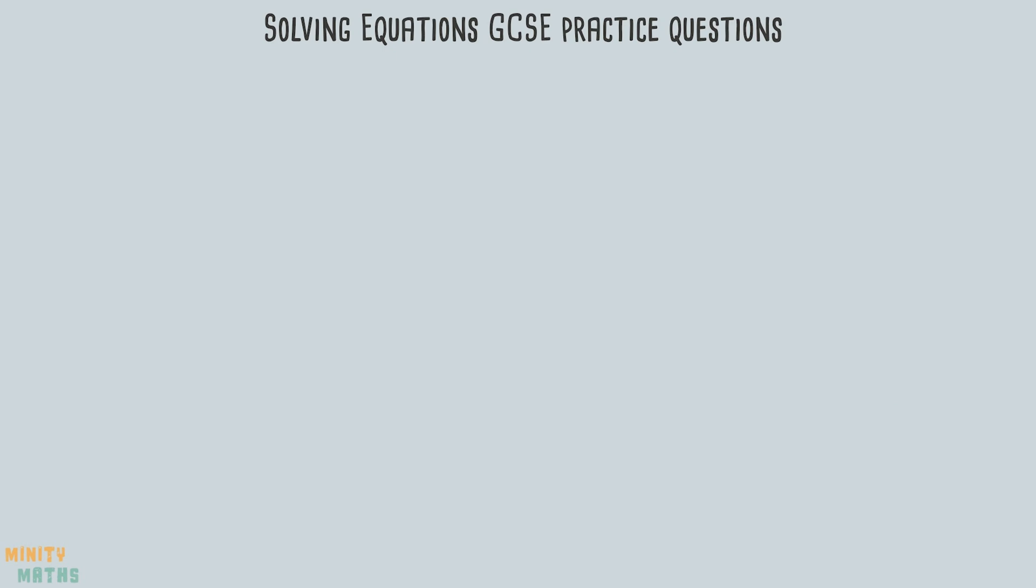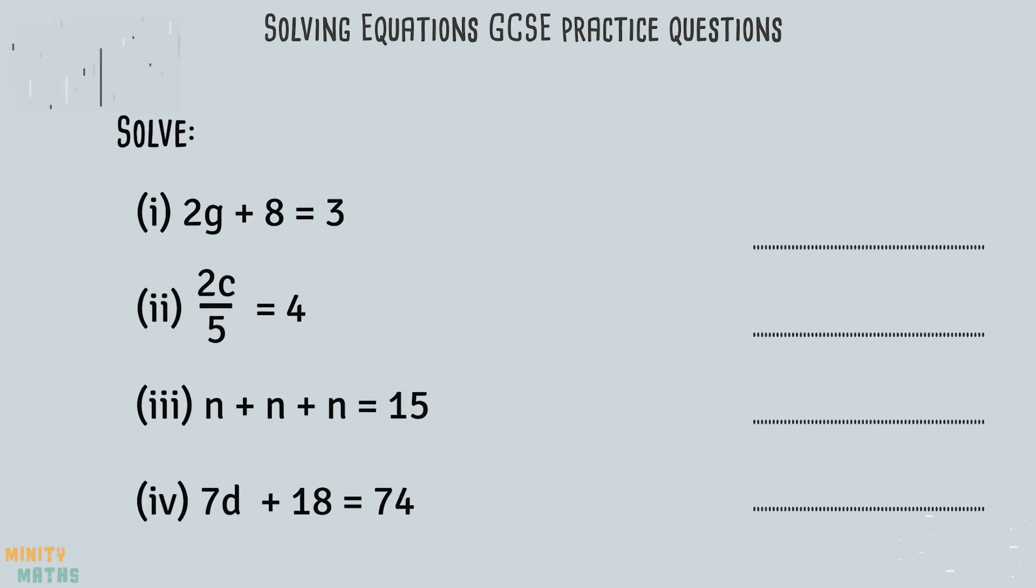The next set of questions are slightly more difficult. The first question requires us to make more than one step to get the variable g on its own. Firstly, we can take away 8 from both sides of the equation. We are then left with an equation which tells us that 2 lots of g equals minus 5. Therefore, 1g is half of minus 5.